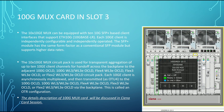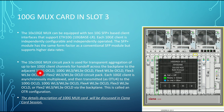The 100G MUX card works similarly to the 40G MUX card but has 10x10G MUX XSP, allowing aggregation of ten 10G services. The 10x10G MUX can be equipped with 10G SFP-based client interfaces supporting Ethernet 10G, where each 10G client is independently configurable and operated. The SFP+ module supports higher data rates than conventional SFP. It is used for transparent aggregation of up to 10G client channels for handoff across the backplane to the adjacent 100G OCLD.